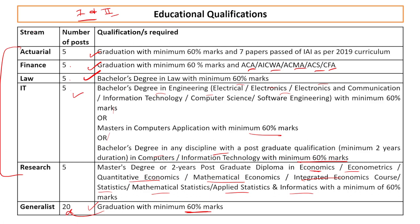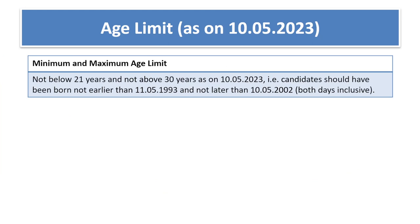If you are eligible for a specialist post like finance, apply for that instead of journalism — there will be less competition. Age limit is 21 to 30 years as on 10th of May 2023. The candidate should not have been born before 11th of May 1993 or later than 10th of May 2002.